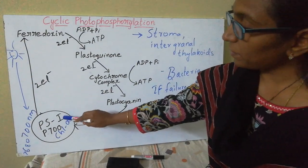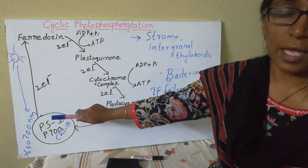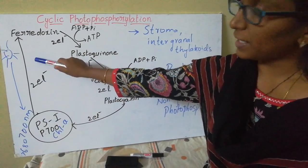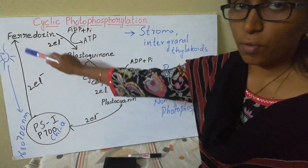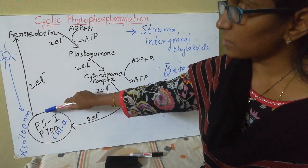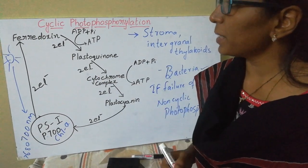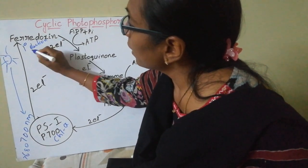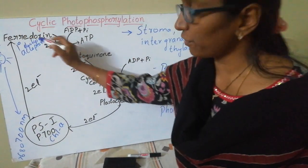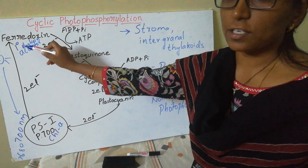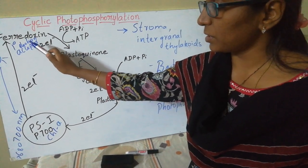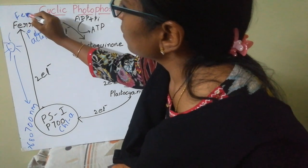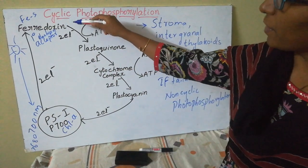Once Photosystem 1 is absorbing sunlight, it becomes energized — it is no longer in a stable ground state; it gets excited and releases electrons. From Photosystem 1, the released electrons travel in an uphill manner and are accepted by the primary electron acceptor, which is ferredoxin. Ferredoxin is an iron-sulfur containing protein.